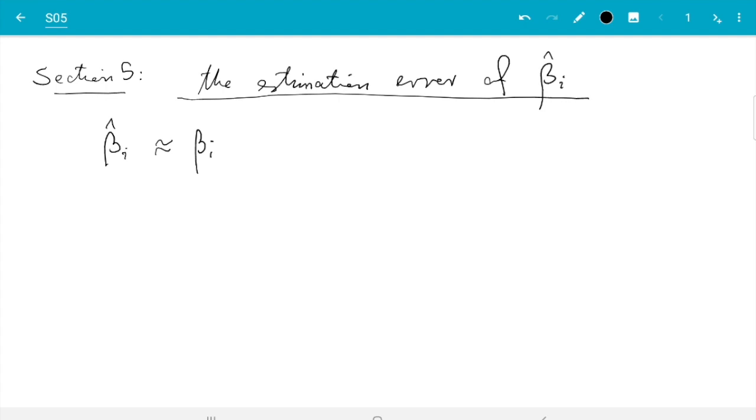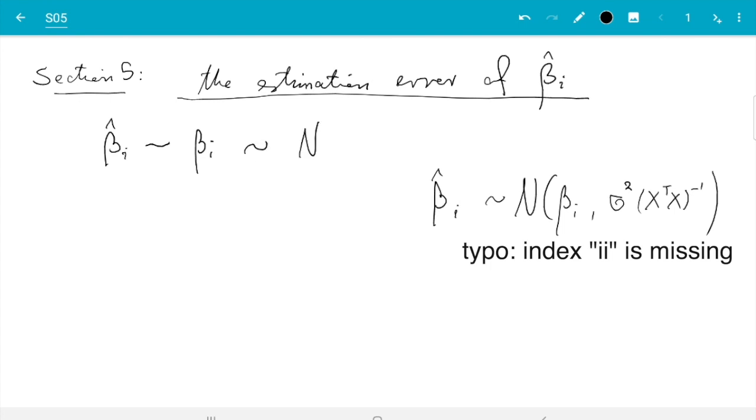So we need to work a bit on that. The first question I want to ask is how should we measure the difference between the two - the estimation error. The naive way would be beta hat i minus beta i. But this is not so useful in practical terms because we have seen beta hat i is normally distributed with mean beta i and variance sigma squared x transpose x inverse. So after I subtract beta i we know that's normally distributed with mean zero and the same variance sigma squared x transpose x inverse.